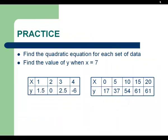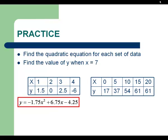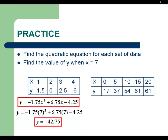Here's two more for you to try. Pause until you're ready. On the first equation, you should get y equals negative 1.75x squared plus 6.75x minus 4.25. When you plug in 7 as x, we're doing negative 1.75 times 7 squared plus 6.75 times 7 minus 4.25. And we get the value of negative 42.75 for an answer.